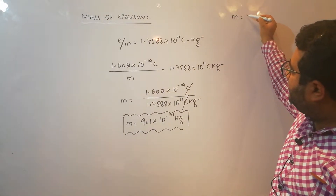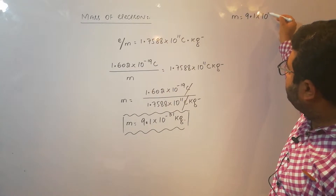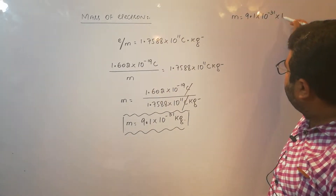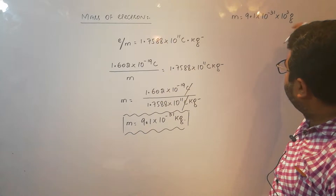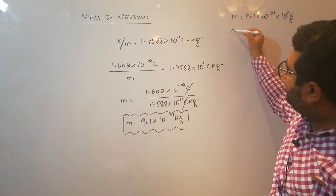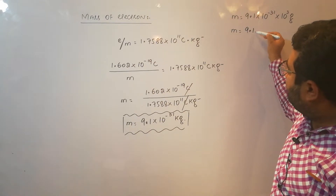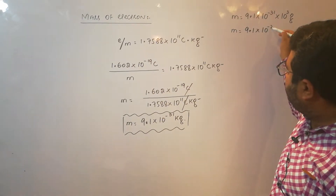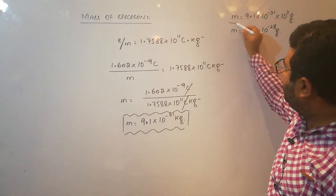You can also convert this mass into grams. M is equal to 9.1 × 10⁻³¹ multiplied by 10³ grams. The value of k is substituted here, giving the mass as 9.1 × 10⁻²⁸ grams.